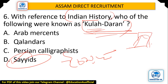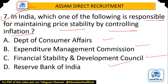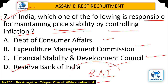Question: In India, which one of the following is responsible for maintaining price stability by controlling inflation? Options: Department of Consumer Affairs, Expenditure Management Commission, Financial Stability and Development Council, or Reserve Bank of India. The answer is Number D — Reserve Bank of India (RBI). The RBI has the power and responsibility to control inflation and keep prices stable.